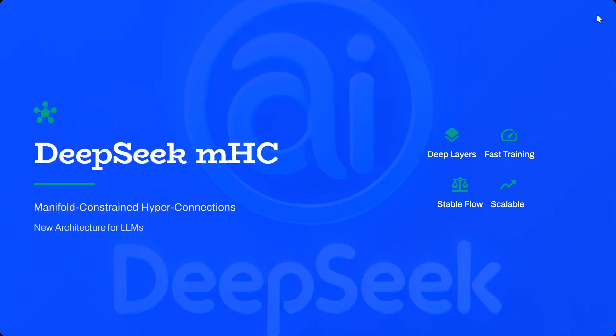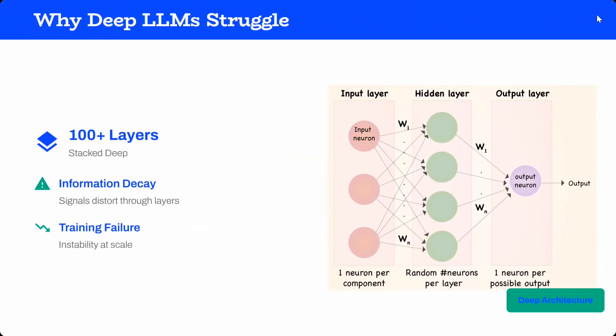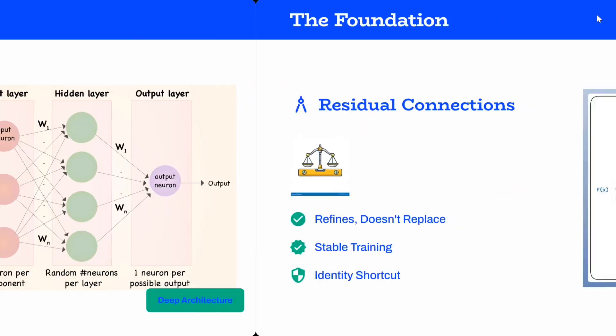DeepSeek MHC: Manifold Constrained Hyper Connections - new architecture for LLMs with deeper layers, faster training, stable flow and scalable. Why deeper LLMs struggle: they have hundreds of layers, information decay happens. Information you capture in the first layer might not reach the hundredth layer. Training failure and instability at scale happens.